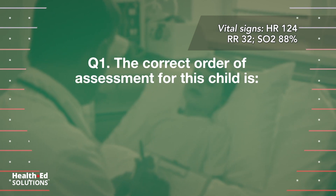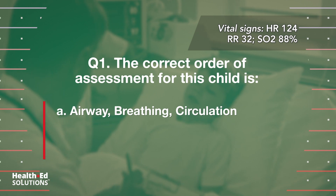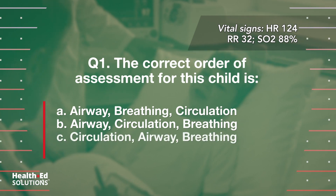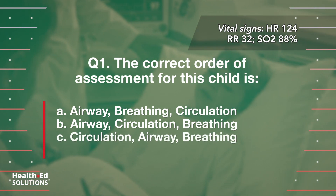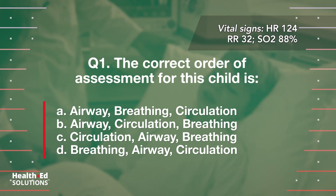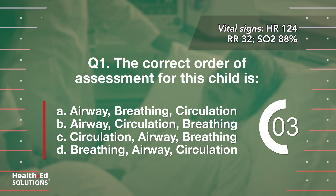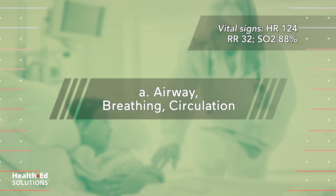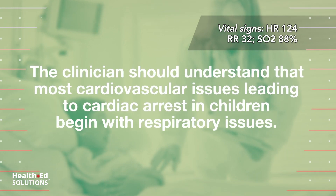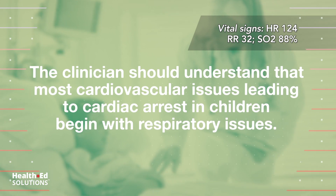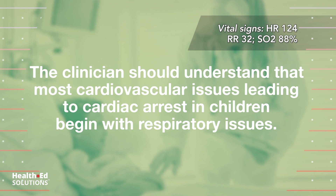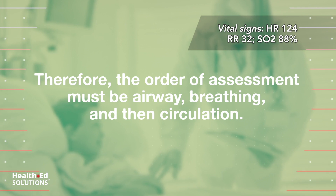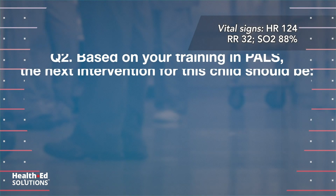Question 1: The correct order of assessment for this child is: A) airway, breathing, circulation; B) airway, circulation, breathing; C) circulation, airway, breathing; D) breathing, airway, circulation. Correct answer A — airway, breathing, circulation. The clinician should understand that most cardiovascular issues leading to cardiac arrest in children begin with respiratory issues, therefore the order of assessment must be airway, breathing, then circulation.